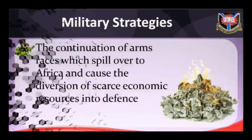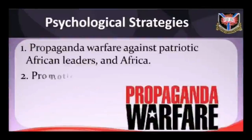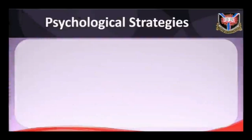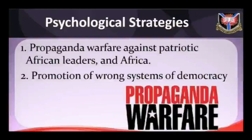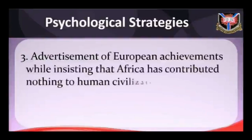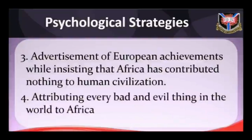Psychological strategies adopted by colonial masters to underdevelop Africa include: A — propaganda warfare against patriotic African leaders and Africa. B — promotion of wrong systems of democracy, such as the lavish praise American leaders and media lavished on the 1983 presidential election in Nigeria, when Nigerians knew it was the worst election so far in Africa. C — advertisement of European achievements while insisting that Africa has contributed nothing to human civilization. D — attributing every bad and evil thing in the world to Africa; for example, AIDS was said to have originated from Africa, whereas available data shows it came from the United States.